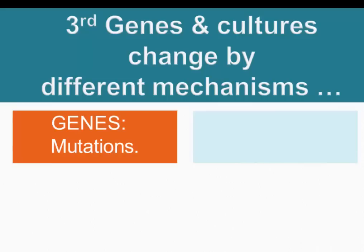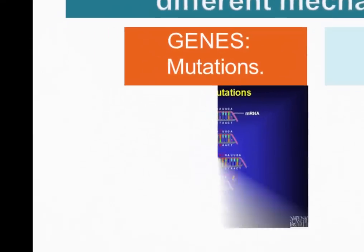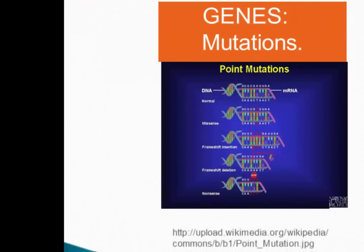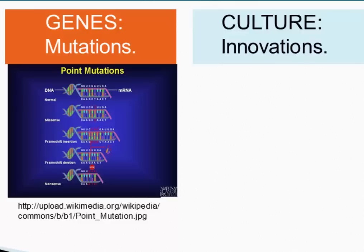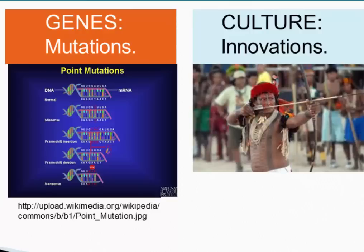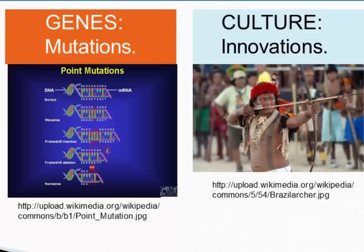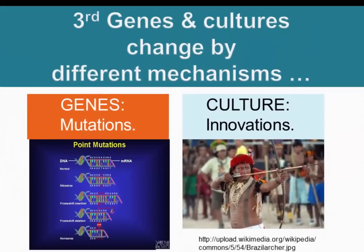The third difference is that genes and cultures change by different mechanisms. For genetic change, the ultimate source is mutations, which are quite well understood. When we look at culture, the ultimate source of new culture refers to innovations, ideas, and knowledge, and we don't have nearly as good an understanding of what leads to innovations as we do of mutations in DNA.